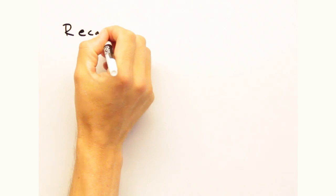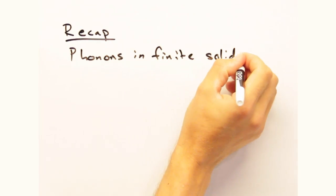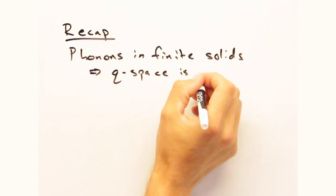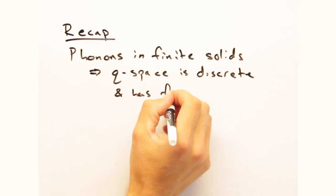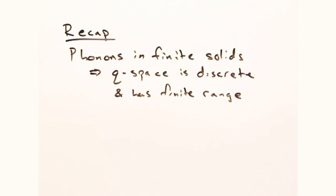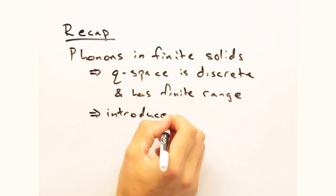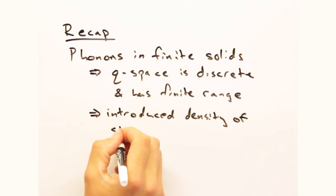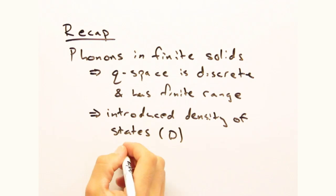Whew. We've covered a lot. Looks like a good time for a recap. Okay, so we've looked at finite solids and how q space is discrete and has a finite range. For this 1D case, the number of modes in a crystal is equal to the number of cells.